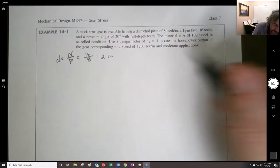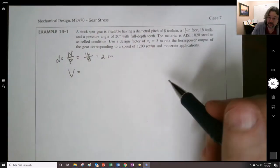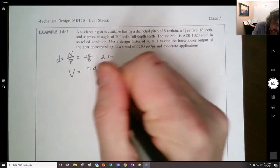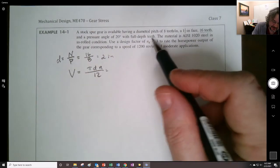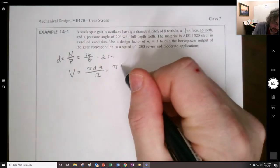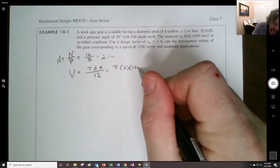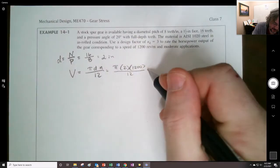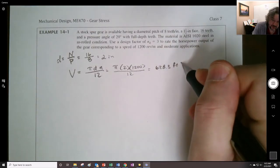Now, the next thing we often want to do is get the pitch line velocity, which is going to be pi d n over 12, where of course that n is RPM. Don't get it confused with the safety factor. That's why they put a d in the subscript right here. This is the RPM. So pi, 2 inches, and the RPM is we were told was 1,200 RPM revolutions per minute, divided by 12 to get it into feet per minute, and we get 628.3 feet per minute.